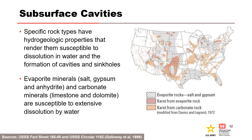This map shows areas where rock types susceptible to dissolution in water occur. These rock types are evaporites — such as salt, gypsum, and anhydrite — and carbonates, including limestone and dolomite. Evaporite rocks underlie about 35 to 40 percent of the United States, though in many areas these rocks are buried at great depths.